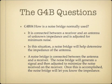How is a noise bridge normally used? A noise bridge is connected between a receiver and an antenna of unknown impedance and is adjusted for minimum noise. A noise bridge will help determine the impedance of the antenna. It generates a signal, then is adjusted to minimize the noise received on the receiver. Once accomplished, the noise bridge indicates the impedance.